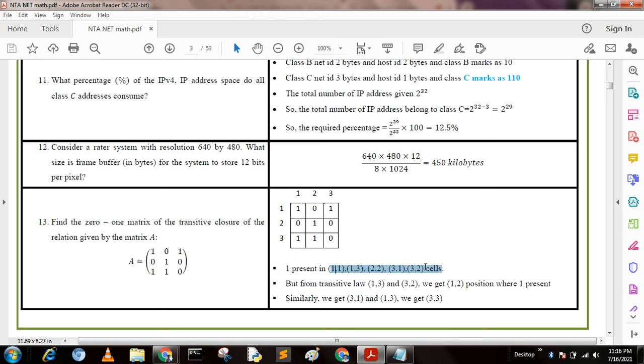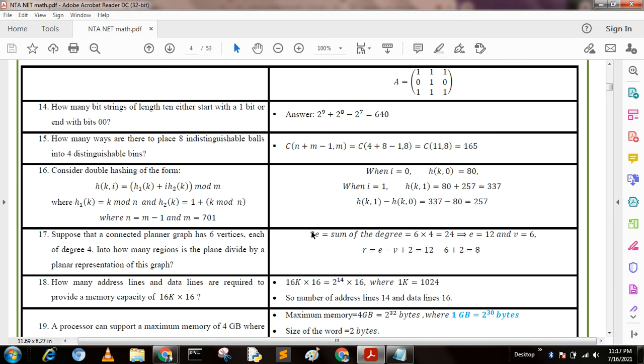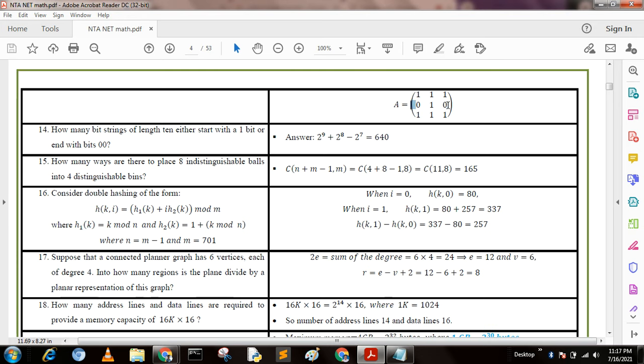From (1,3) and (3,2) we get (1,2) position where 1 is also present. Similarly, from (3,1) and (1,3) we get (3,3) position where 1 is also present. The updated matrix becomes this, and this is the required answer.